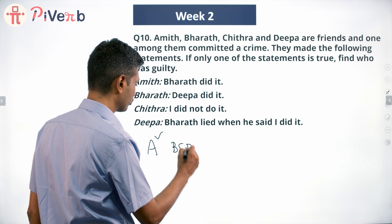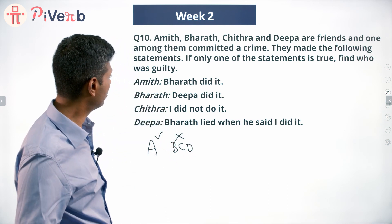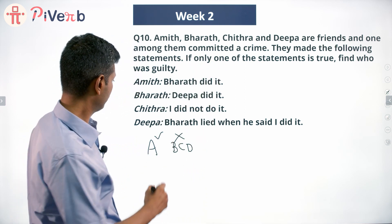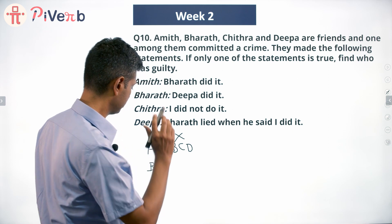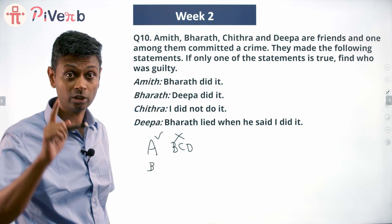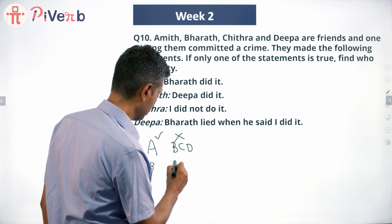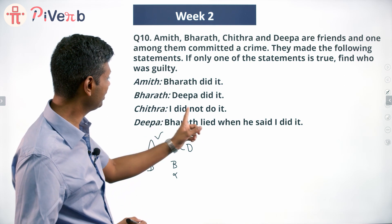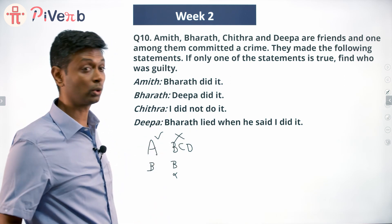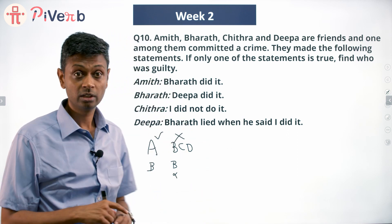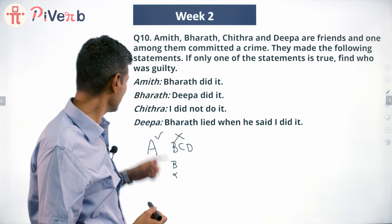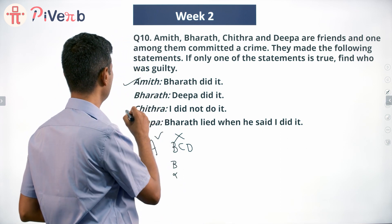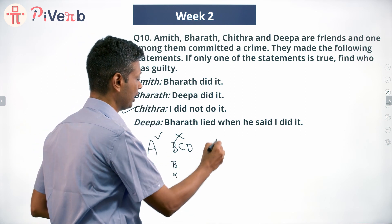B, C, D all lie. Amit says Bharat did it — that means Bharat has committed the crime. Bharat says Deepa did it — that is not true, since Bharat committed the crime, so B is false, which works. C says 'I did not do it' — that is also true. So if A were true, C would also be true. Therefore A cannot be true.